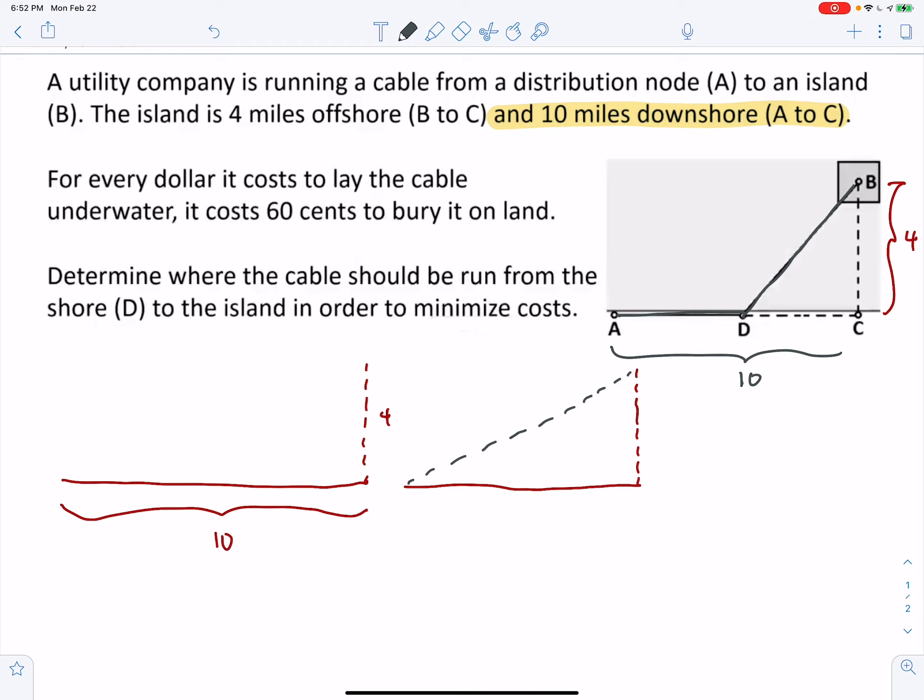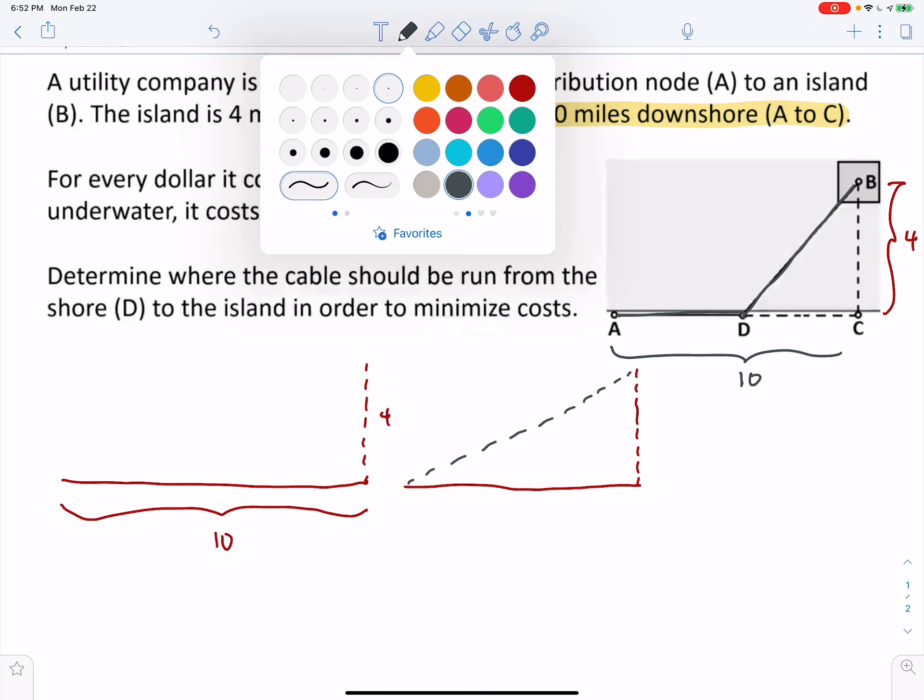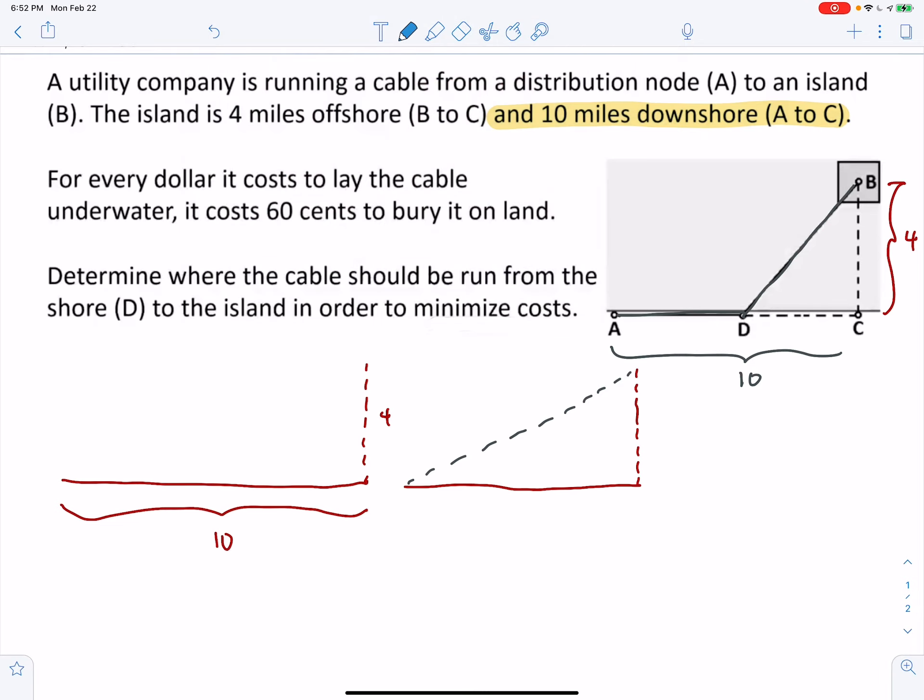So I'm going to do something a little unorthodox here. I'm actually going to call this side right here X and this side right here 10 minus X. And when we get to building the cost function, I'll explain why we do that, because it actually turns out to be a little bit computationally nicer.